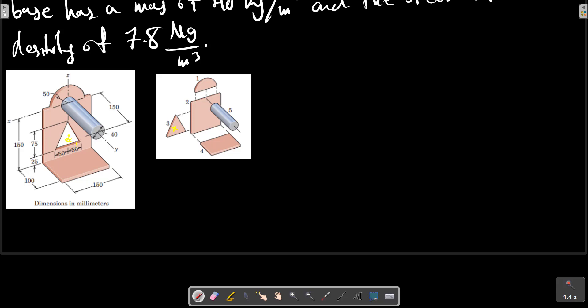The mass of each part is easily calculated and should need no further explanation. For part A, which is a semi-circle, we use the relation for a circular plate. If we have an angle alpha, we use this relation for the centroid.